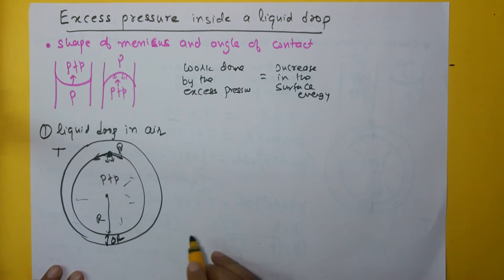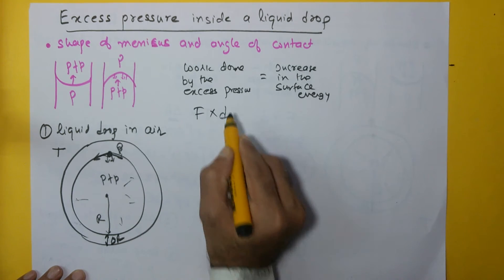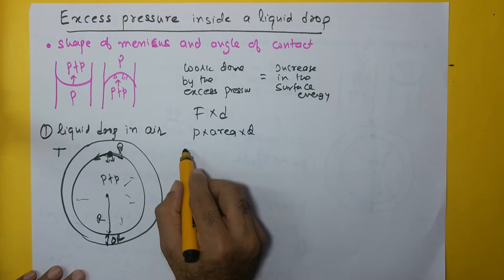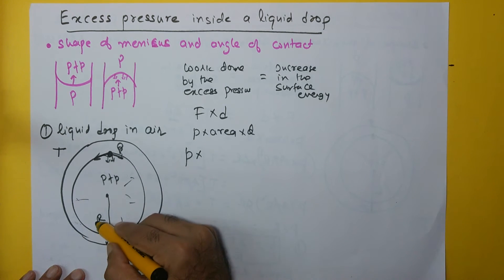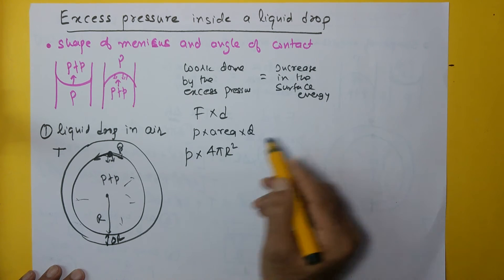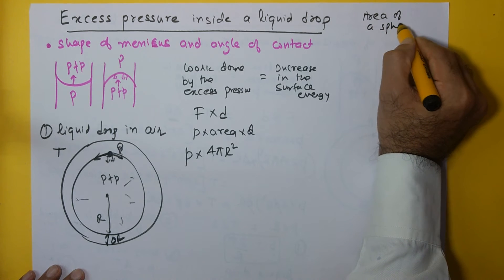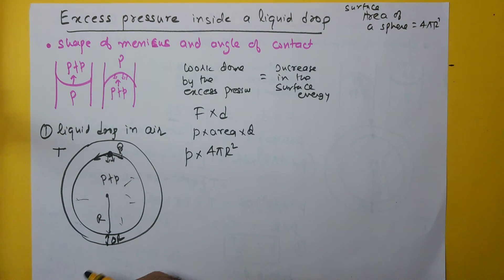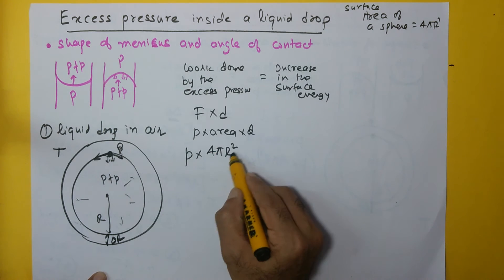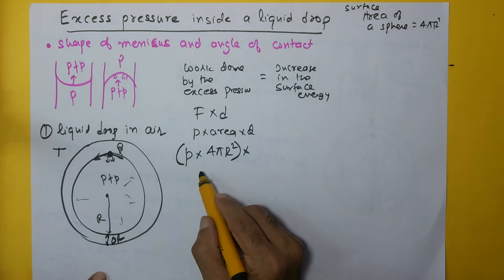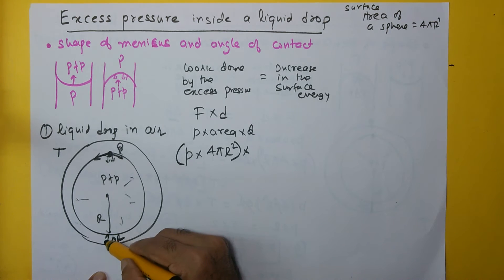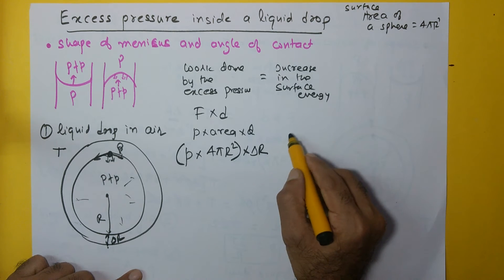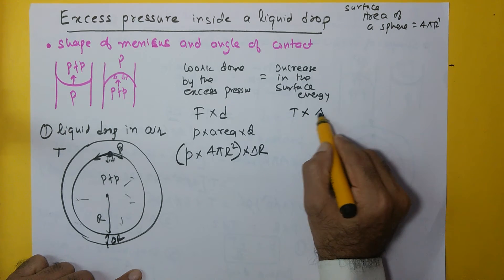Let's say the radius R increases by a very small value delta r. Work done equals force into displacement. The force is equal to pressure into area into displacement: the excess pressure is p, the area of the sphere is 4π r squared — because the surface area of a sphere is 4π r squared — so the force is p times 4π r squared. This is multiplied by distance delta r, because that is the increase. So work done equals p times 4π r squared times delta r.